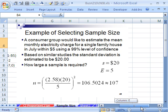So let's look at our example here. Consumer group would like to estimate the mean monthly electricity charge for a single family house in July within $5 using a 99% confidence interval. Based on similar studies, the standard deviation is estimated to be $20. How large a sample is required?